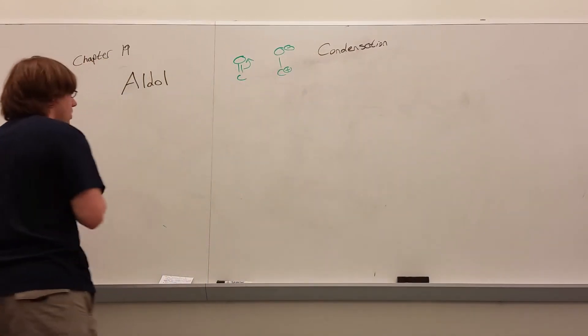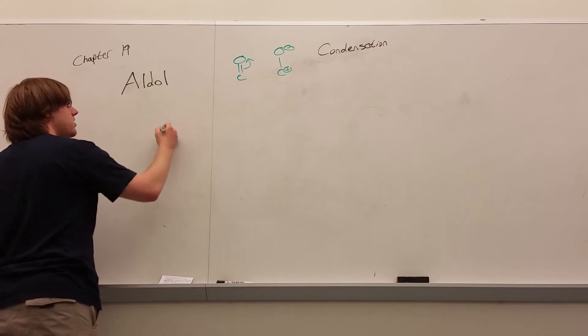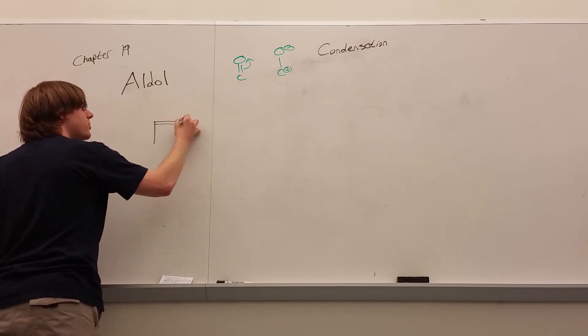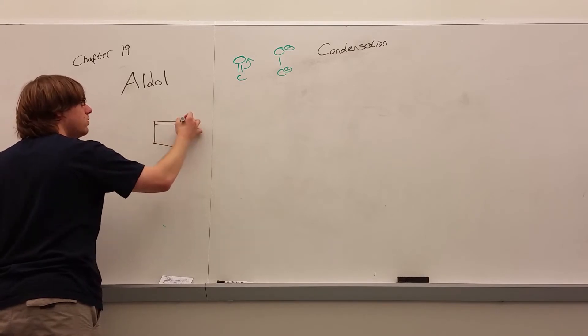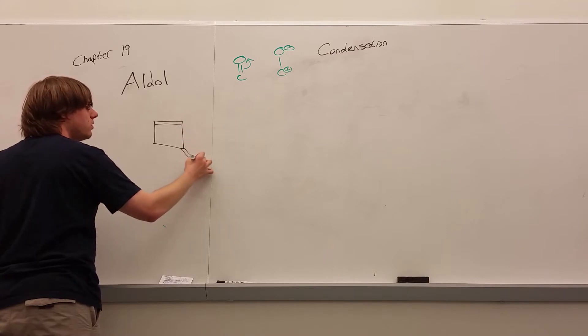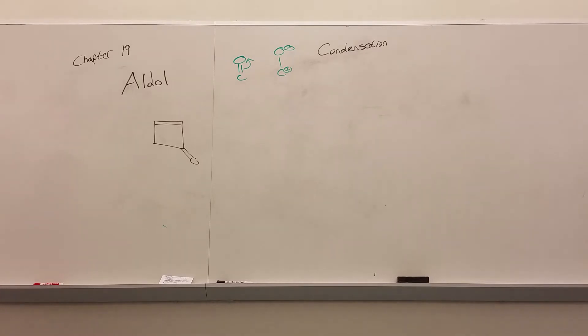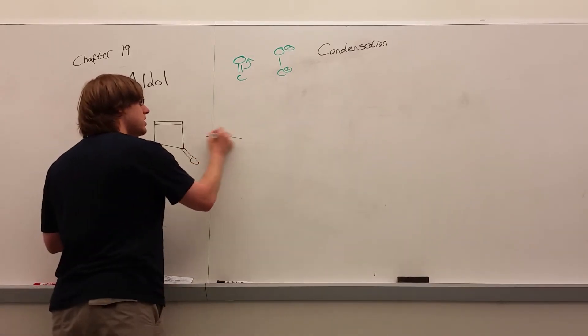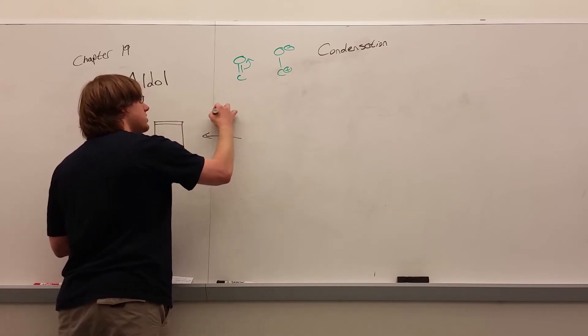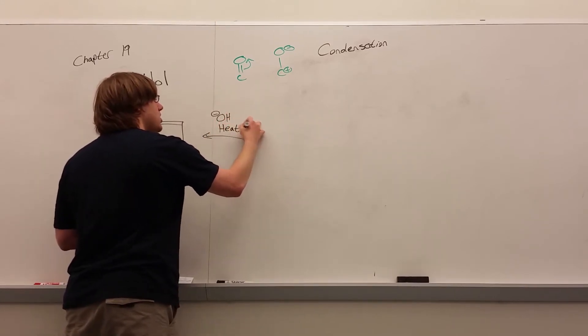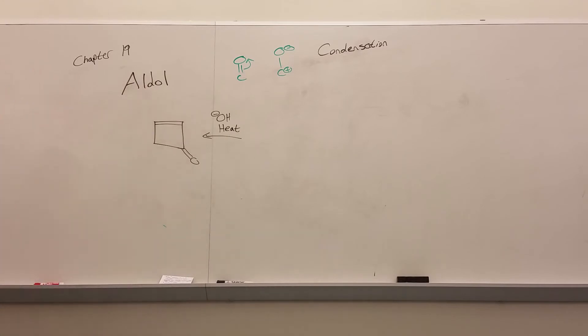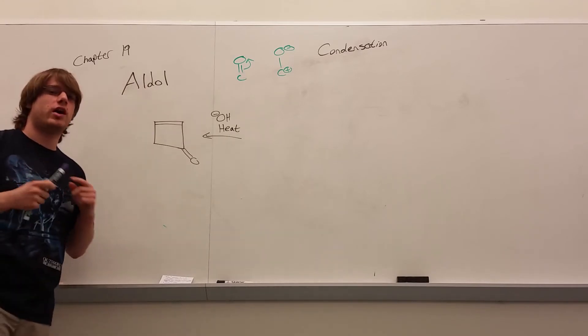So let's say they wanted to know what were the two pieces that came together to make, say, this four-membered ring here. Let's say they asked you, what was the reactant that came together to make this in the presence of OH- and heat? So again, first you should be able to recognize that this is the product of an aldol condensation.